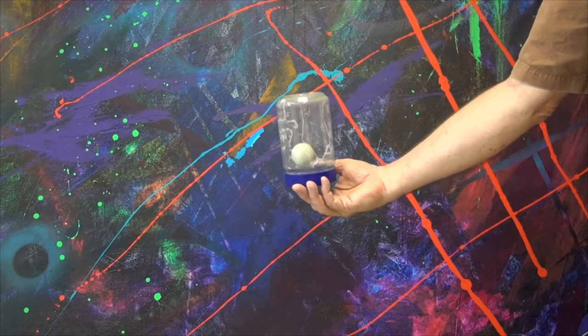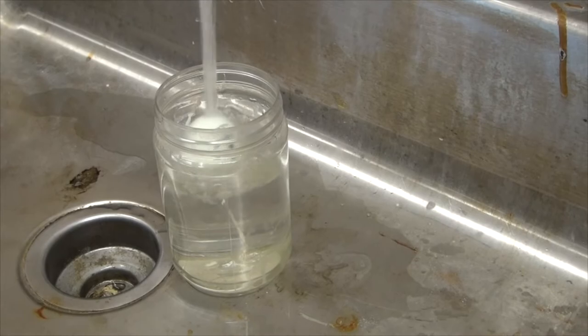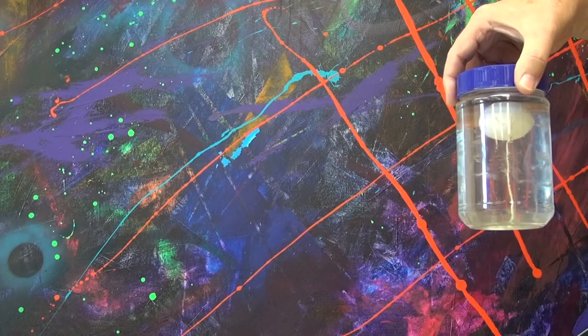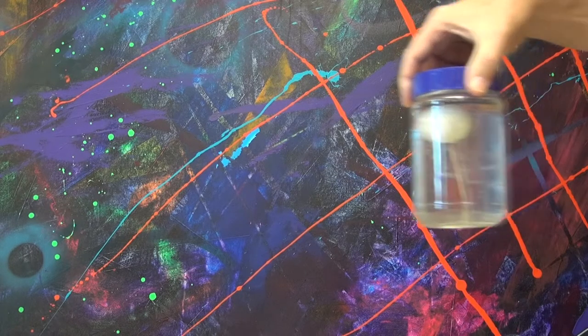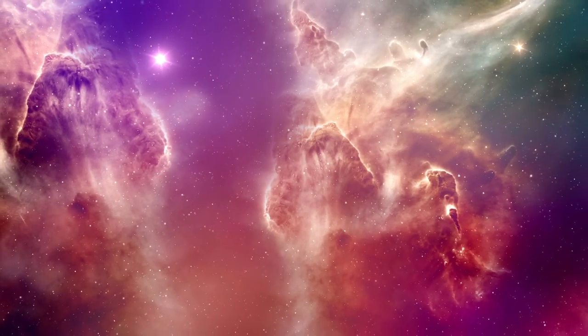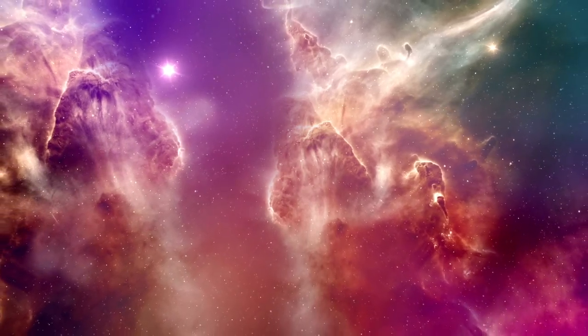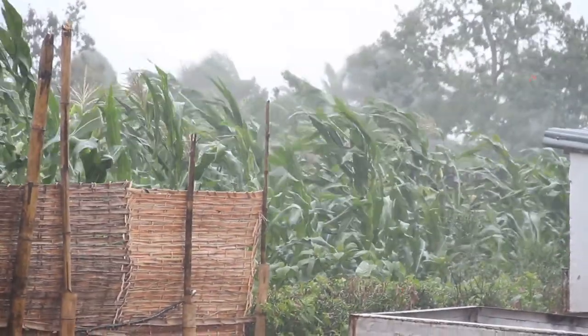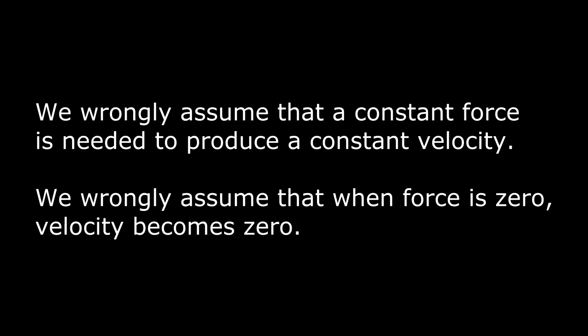This ping pong ball has very little mass. It's tied by a string to the bottom of the jar. When we fill the jar with water, the ping pong ball floats to the top. If we suddenly push the jar to the left, the heavy water tries to stay in place, pushing the low-mass ping pong ball toward the front. So far in this course, our goal is to understand the nature of motion throughout the universe. We wrongly assume that a constant force is needed to produce a constant velocity. We wrongly assume that when force is zero, velocity becomes zero.